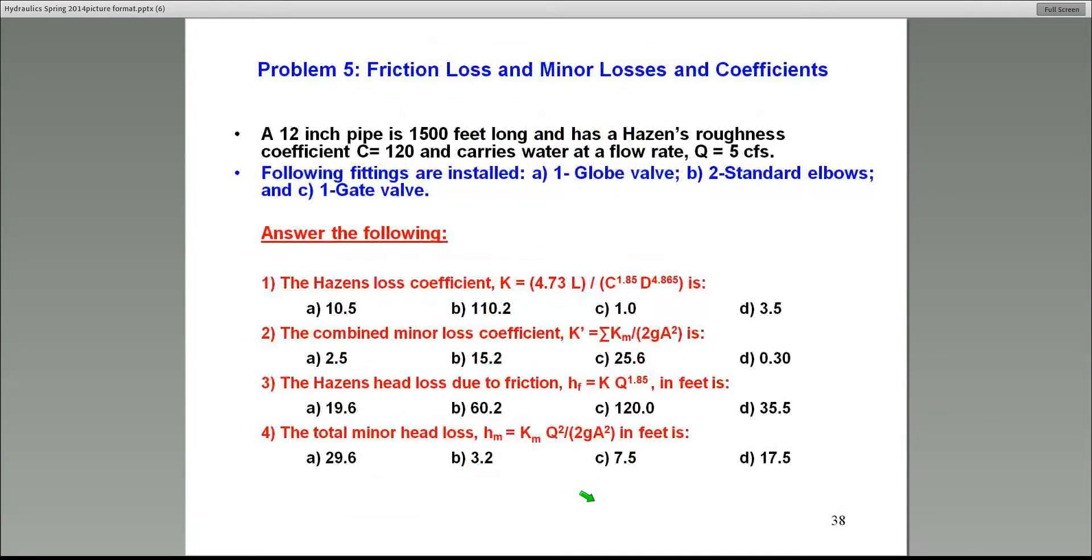I've set up a small example for you to calculate particularly these K values. And then, of course, finally, step number three to calculate the head loss in this particular pipe situation. You've got a 12-inch pipe, 1,500 foot long, Hazen's C is 120, the flow rate is given as 5 CFS. So the first thing you will do in many problems is to calculate that loss coefficient that I told you K. In this case, it's 4.73L over C to the power 1.85, D to the power 4.865.